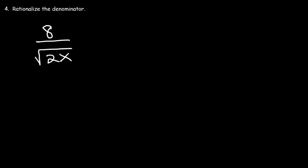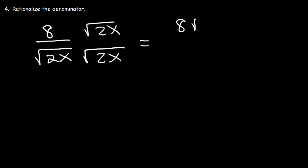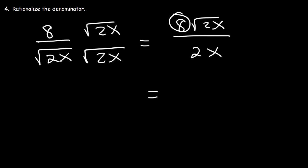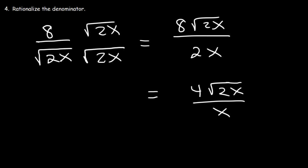Number 4. Rationalize the denominator. We need to get rid of the square root function in the bottom of the fraction. To do that, we need to multiply the top and the bottom by the square root of x. So on top, it's going to be 8 root 2x. On the bottom, the square root of 2x times the square root of 2x is simply 2x. And now we can divide 8 by 2 — 8 divided by 2 is 4. So the answer is 4 square root 2x divided by x.